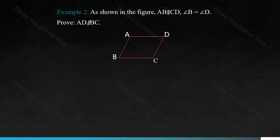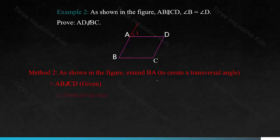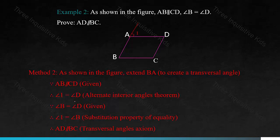Method 2: as shown in the figure, you can extend BA to create a transversal angle. Because AB is parallel to CD, therefore angle 1 equals angle D — that's the alternate interior angles theorem. Because angle B equals angle D, that's given, therefore angle 1 equals angle B, using the substitution property of equality. Therefore AD is parallel to BC, using the transversal angles axiom.